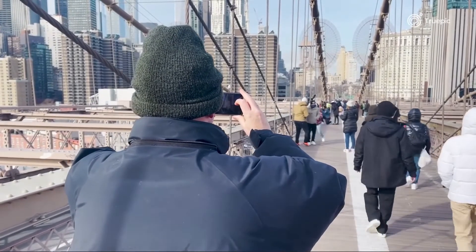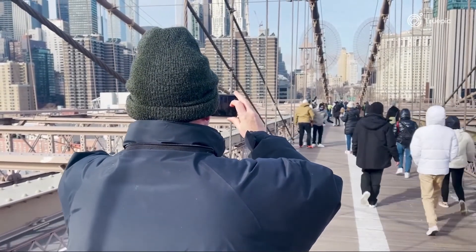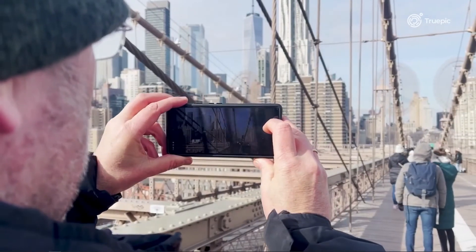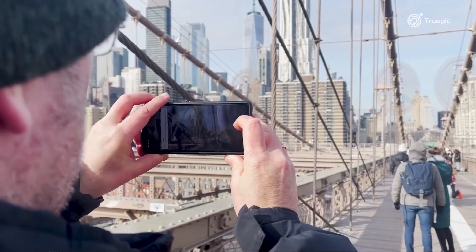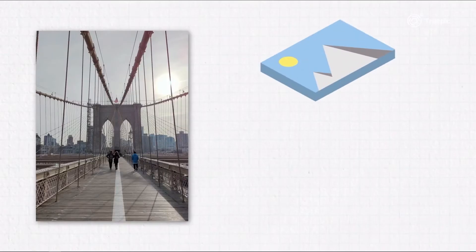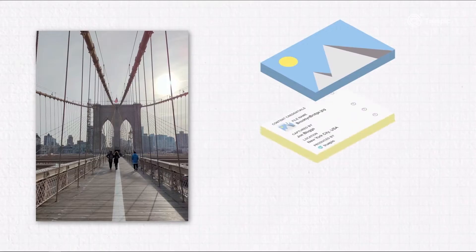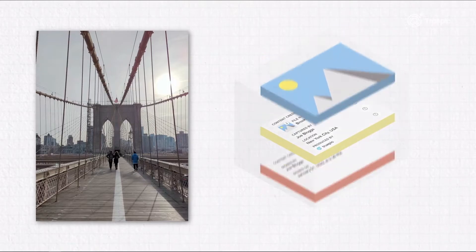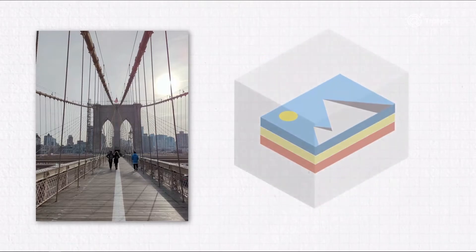A photographer in New York takes a photo of the Brooklyn Bridge. His camera is set up with TruPix software which is running a C2PA implementation, so as soon as he takes the photo it securely records all of the photo's provenance information into a manifest and binds it together with the photo using a tamper-evident cryptographic signature.